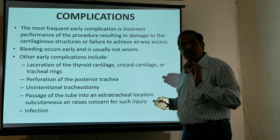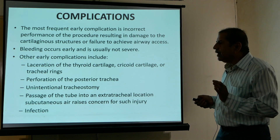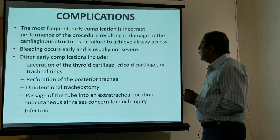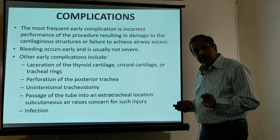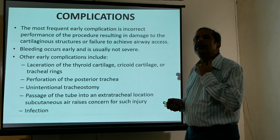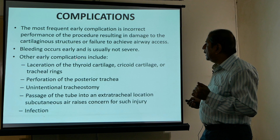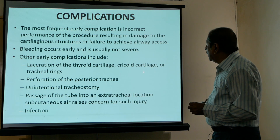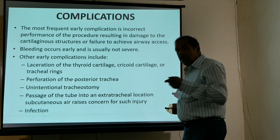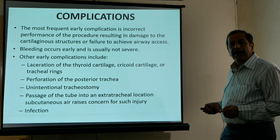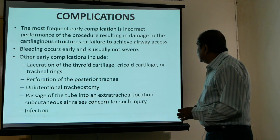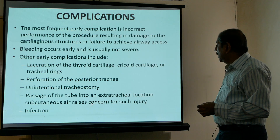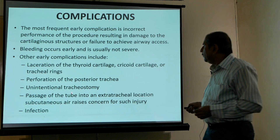When performed by trained hands, complications are few. However, bleeding can occur early — though usually not severe — and can be minimized by keeping the incision away from the upper border where the vessels lie. Other complications include injury to the thyroid cartilage or tracheal rings, posterior tracheal wall perforation, unintentional misplacement of the tracheal tube into an extratracheal location, subcutaneous emphysema, and later infection.